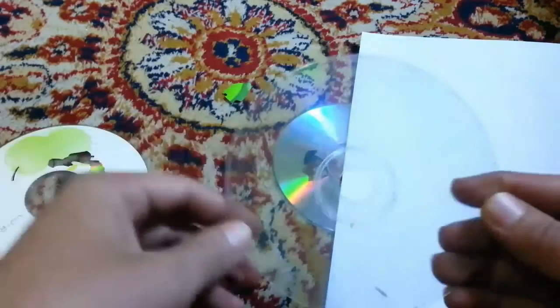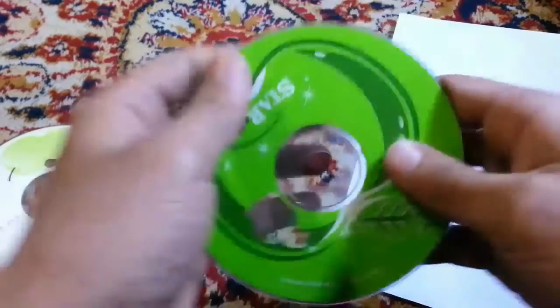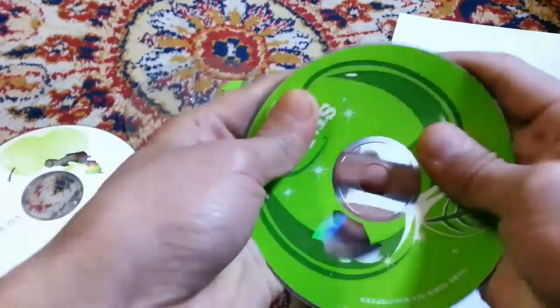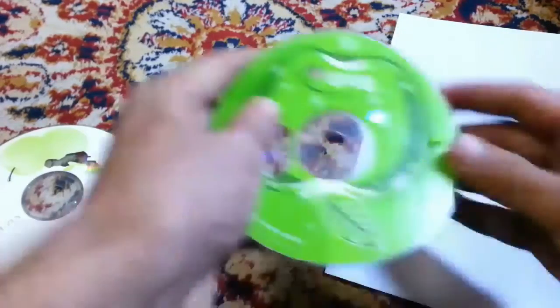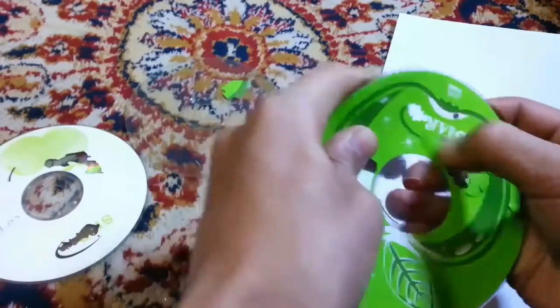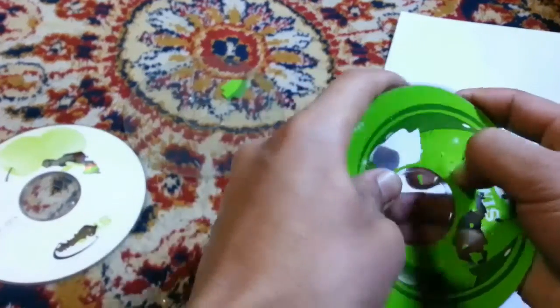To make it transparent like this, take the CD and first bend it on one side, then on the other side, and keep doing that. After some time you'll be able to remove the color with your nail and you will get a transparent CD in one minute.